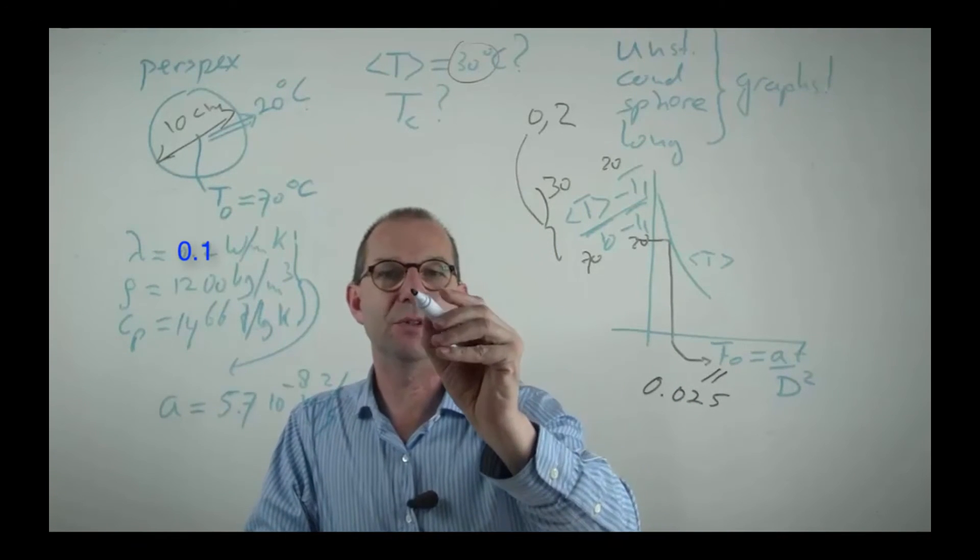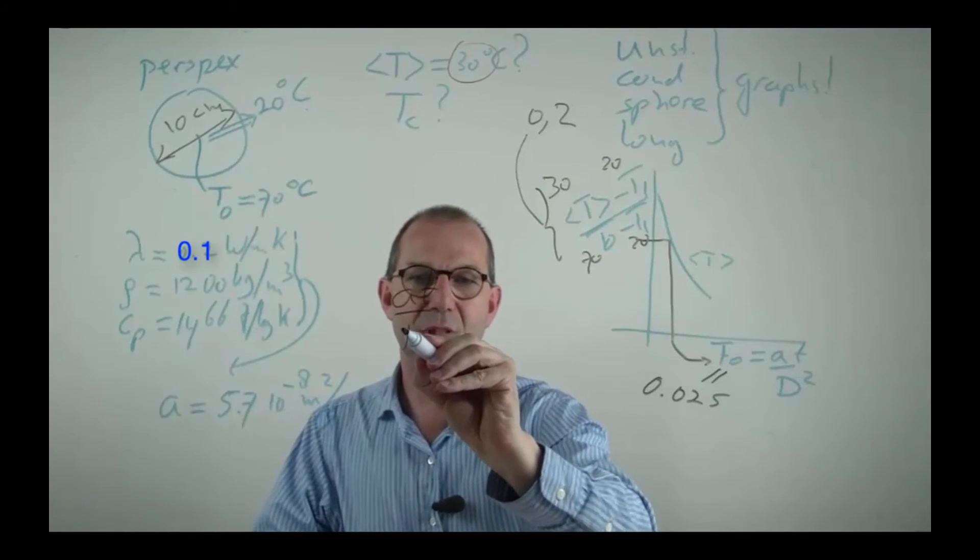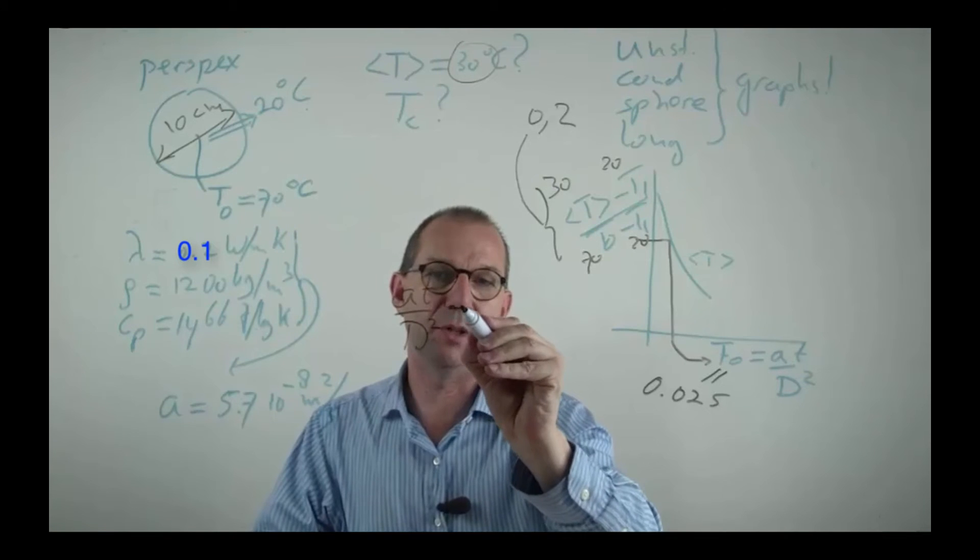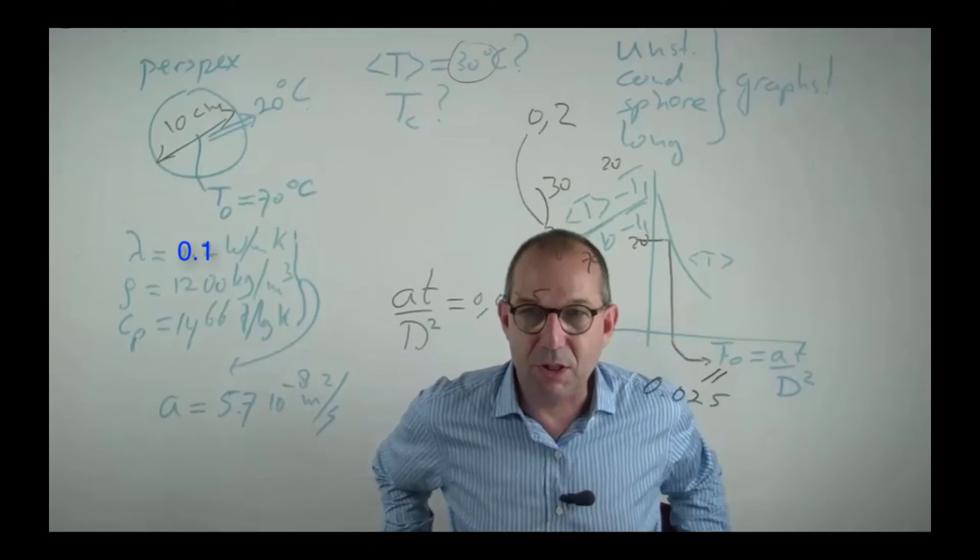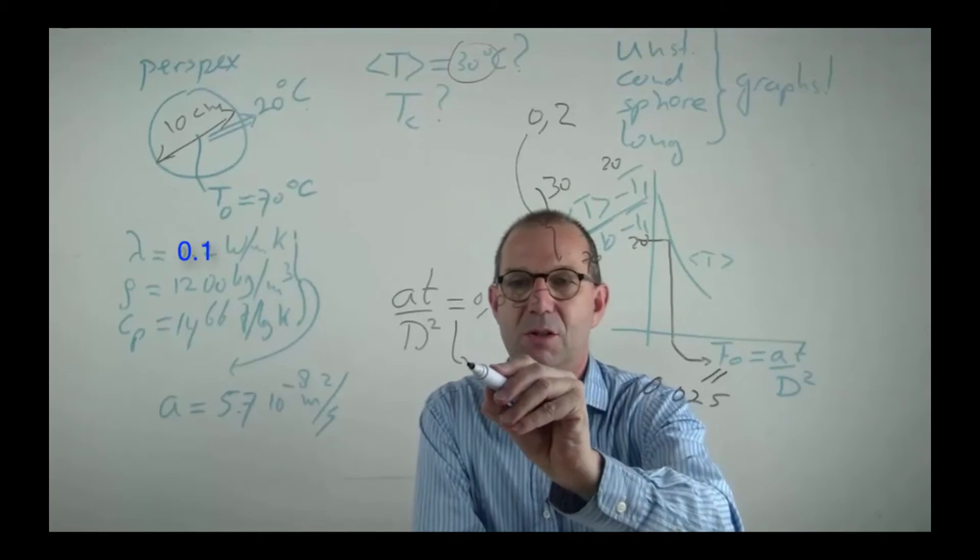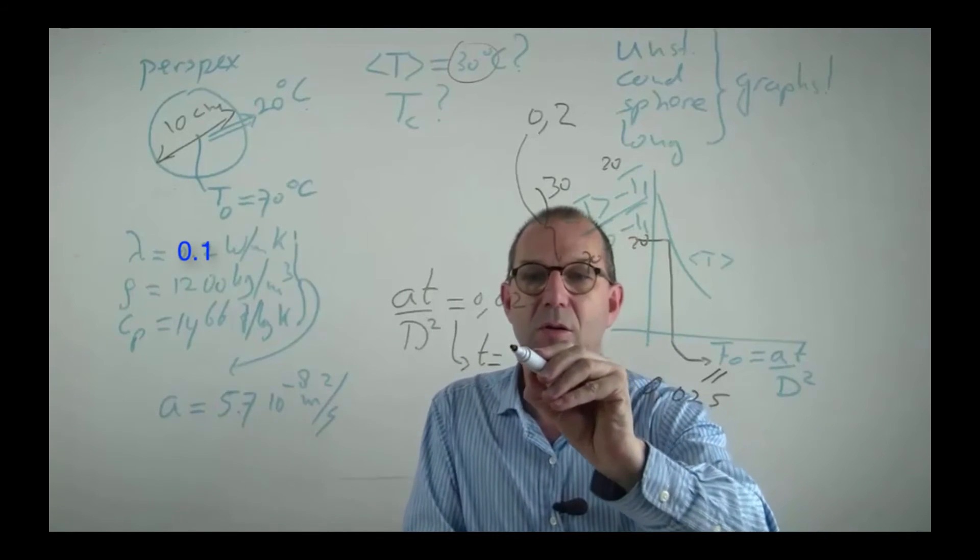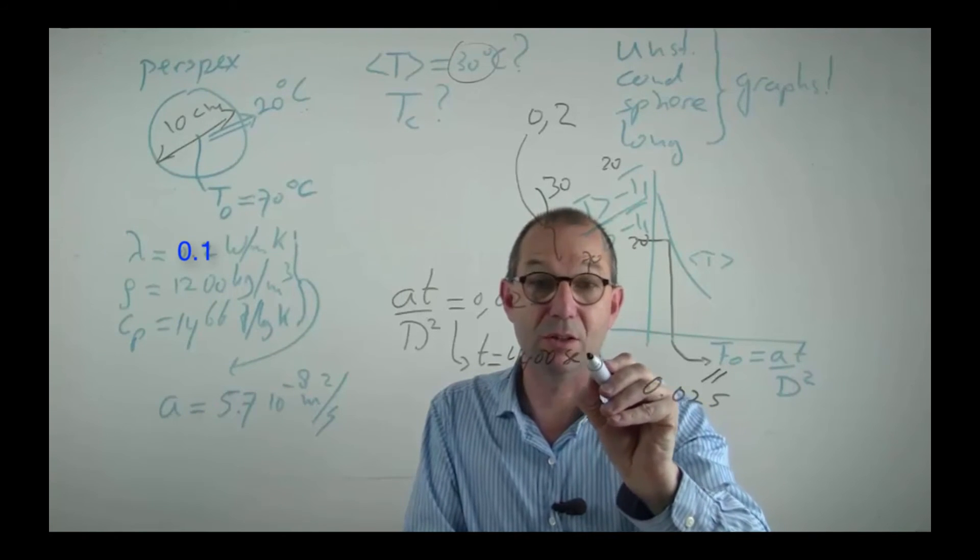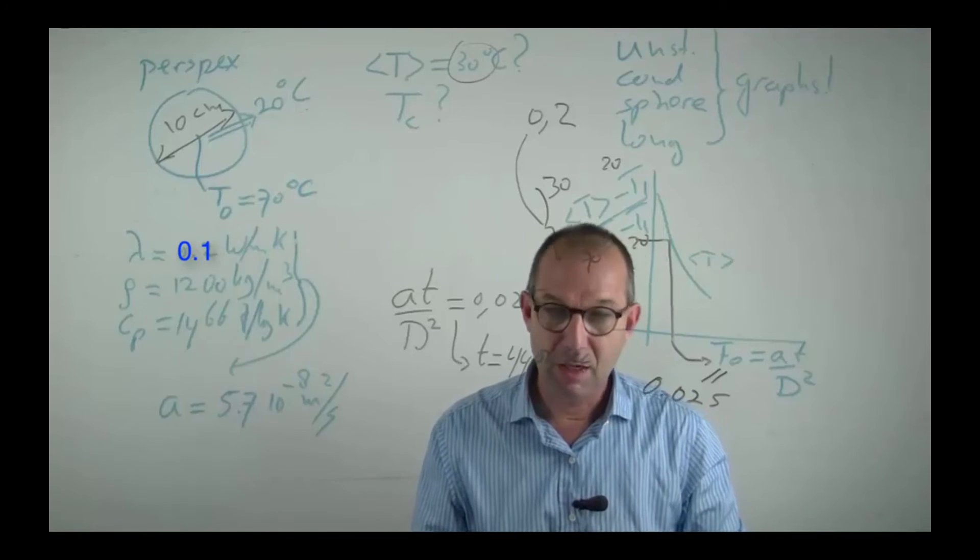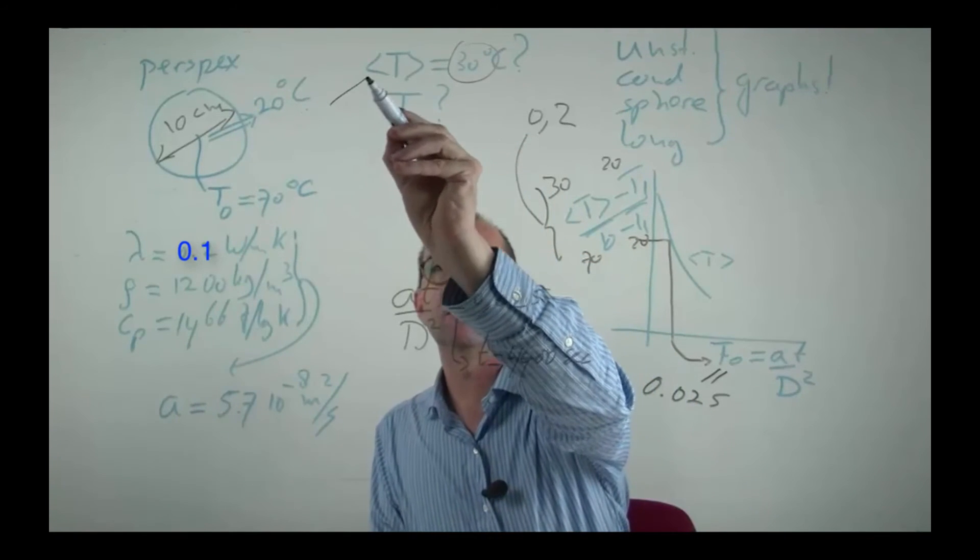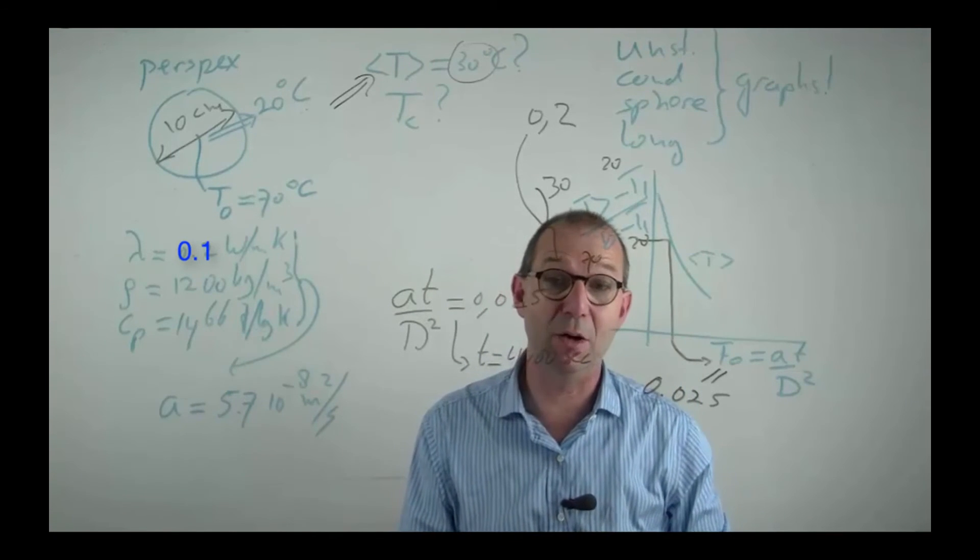Thus, I find the time from At over d squared. The Fourier number is 0.025. I'll move over to the side so that you can read and thus the time equals 4400 seconds. Remarkably long, but it's a relatively big sphere. That is answering this question. How long does it take for the mean temperature? Quite a bit over an hour.